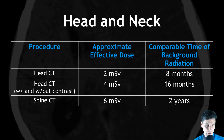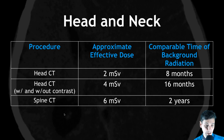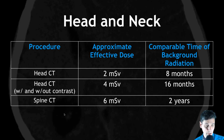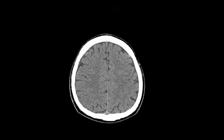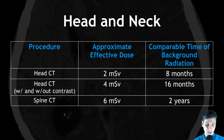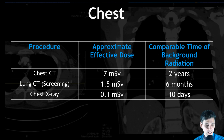For head and neck, a standard head and neck CT is about two millisieverts — comparable to about eight months of background radiation. A head CT done with and without contrast would be about twice as much: about four millisieverts, or about 16 months of background radiation. A spine CT is six millisieverts, or about two years.